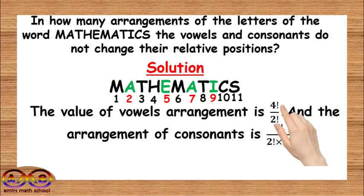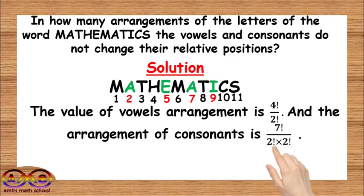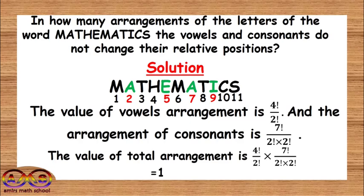This 4 factorial is for 4 vowels — A, E, A, I — and this 2 factorial is for the 2 A's. This 7 factorial is for the 7 consonants, this 2 factorial is for the 2 M's, and this 2 factorial is for the 2 T's. So the value of the total arrangement is the multiplication of these two arrangements, which is 15,120.